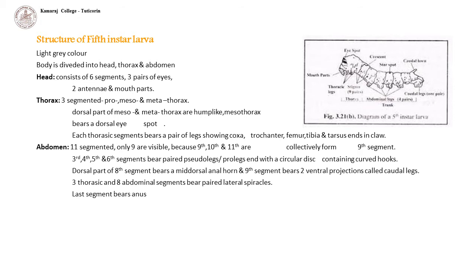Abdomen is 11-segmented, of which only 9 are visible because the 9th, 10th and 11th segments collectively form the 9th segment. The 3rd, 4th, 5th and 6th abdominal segments bear paired lateral muscular projections called pseudo-legs or pro-legs, which end with a circular disc containing curved hooks. The dorsal part of the 8th segment bears a mid-dorsal anal horn, and the 9th segment bears 2 ventral projections called caudal legs. Three thoracic and 8 abdominal segments bear paired lateral spiracles. The last abdominal segment bears the anal opening.